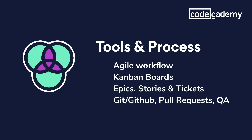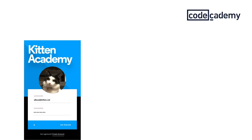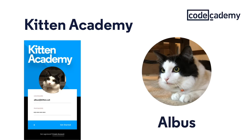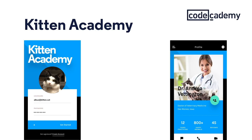For our video, imagine we have a fictitious company we'll call Kitten Academy, where new cat owners can find answers to how to raise healthy and happy kittens. We'll use my cat, Albus, as our mascot. It's been decided that the priority is to create a feature on our website that allows users to schedule video conferencing between new cat owners and real veterinarians to answer all their questions they might have.